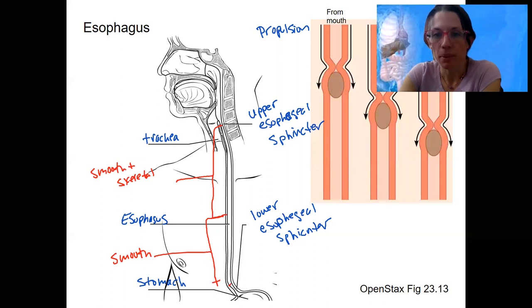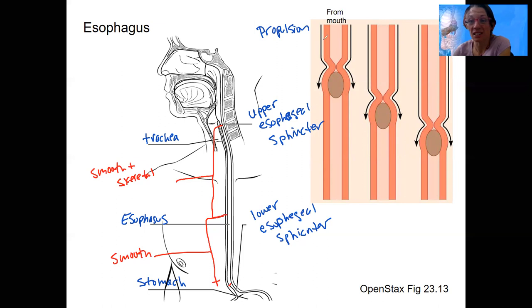This is called peristalsis. And we will see this again, both in the intestine and in the esophagus. So peristalsis is movement in one direction, in this case from the mouth to the stomach.